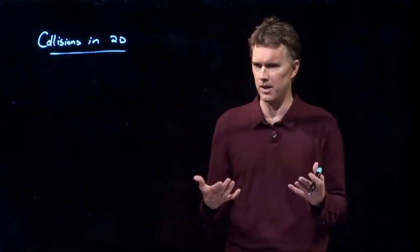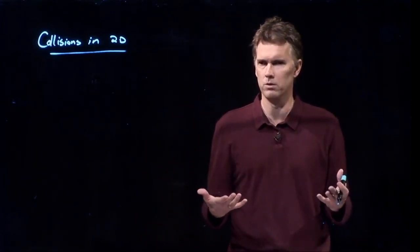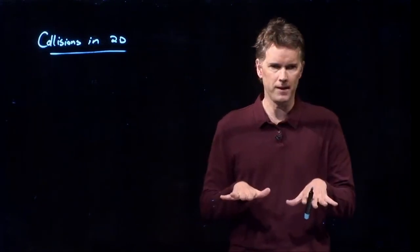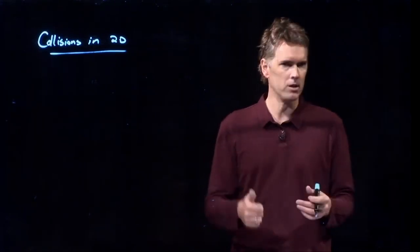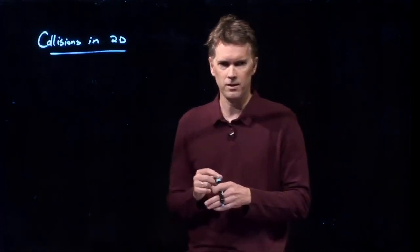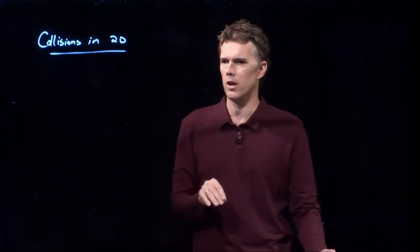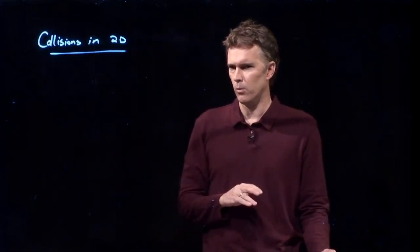Billiards is another example of two-dimensional collisions. They are constrained to move around the surface of the table. They typically don't jump up off the table unless you're doing some trick shots. So they stay in these two dimensions. So two dimensions really governs a lot of what we're worried about with collisions.